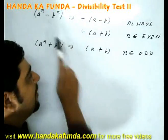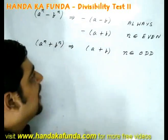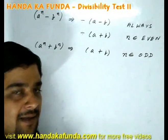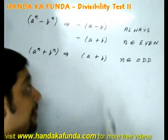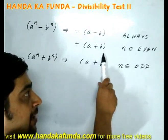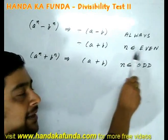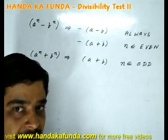a to the power n minus b to the power n will always be divisible by a minus b. It will also be divisible by a plus b when n is even.